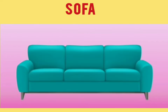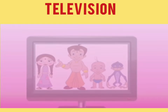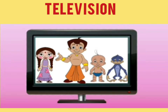Sofa. This is a sofa and we all sit on the sofa in the living room. Television. This is a television and we all watch cartoons on television in the living room. You all watch cartoons on television, children?